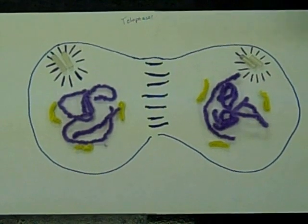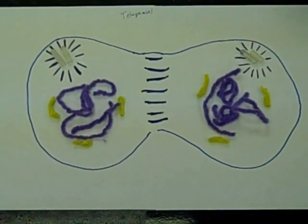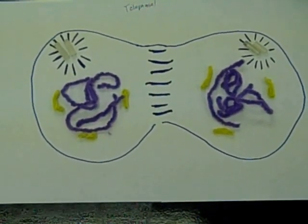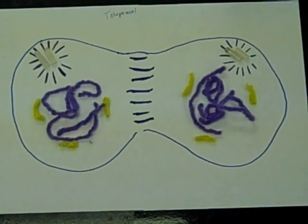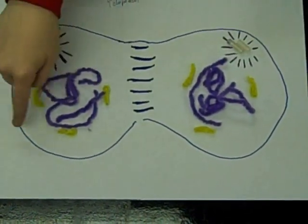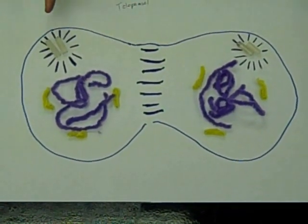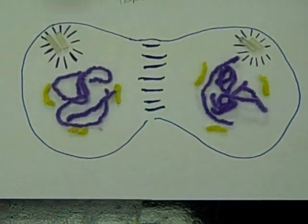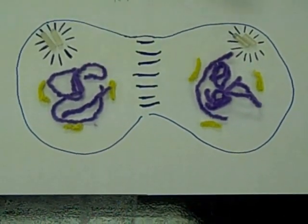Telophase is my fourth and final phase. It begins when the sister chromatids reach the opposite poles of the cell. My chromosomes uncoil, as a new nuclear envelope forms around them. The spindle, which came from my centrosomes, dissolves. Two genetically identical nuclei now exist.